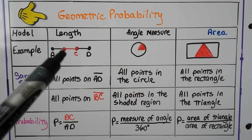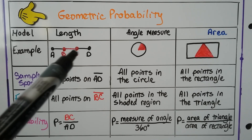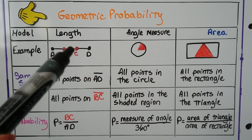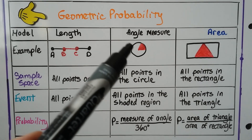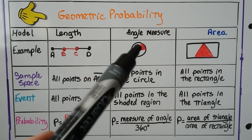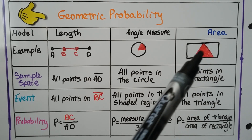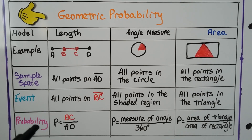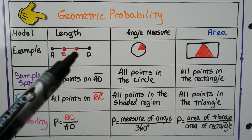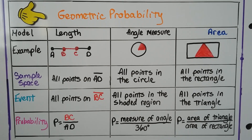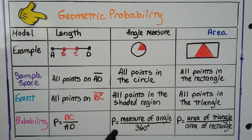For the event — using length — it would be all points on segment BC. For angle measure, it would be all points in the shaded region, everything in this red angle. The event for area would be all points in this red triangle. Our probability would be BC over AD for length; the measure of the angle over 360 degrees for angle measure; and the area of the triangle over the area of the rectangle for area.